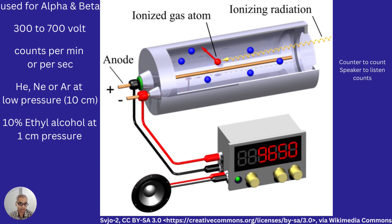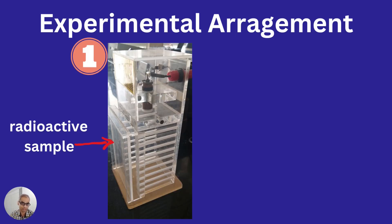The counter can register counts that we can hear through speakers. In the experimental arrangement of the GM counter, a small tube is visible at the top, attached to the high voltage supply. The positive terminal is connected to the central tungsten rod and the outer part is copper. The radioactive sample is kept in slots — the third, fourth, fifth slot and so on — and the radiation is allowed to pass into the GM tube.